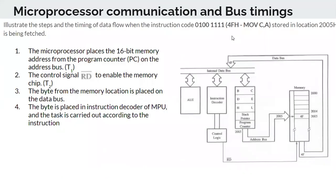We will take an example — reading instruction 4F from address 2005 in main memory into the microprocessor. This is the main memory. Imagine it like a paper with lines, where each line has an address — 2000, 2001, 2002 — to identify the location. The data 4F is present at address 2005, and we will see how it is read into the microprocessor.